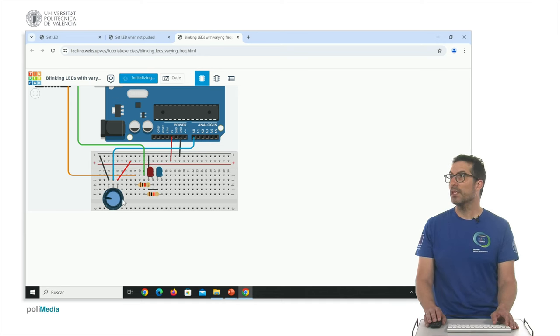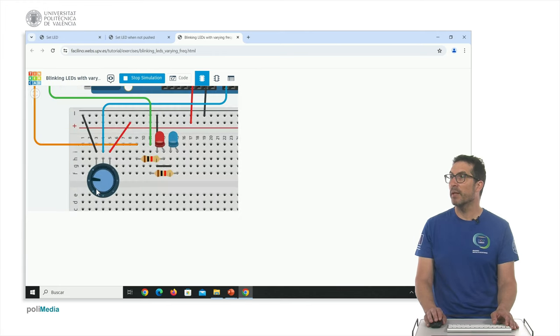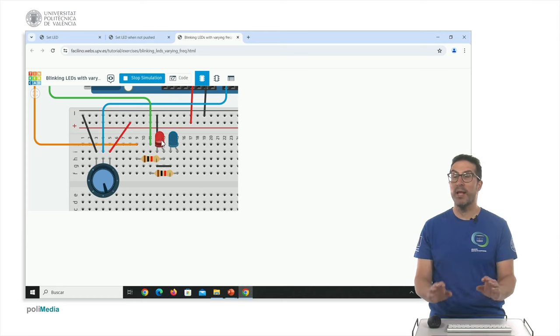This is the frequency that depends on the value of the potentiometer. If we move the wiper, the frequency of the blinking LEDs slows down. We can slow down almost, I mean, the limit was one second, so it's one second and one second each, but we can blink them so fast that, apparently, they are even always light on. This is how this exercise works.